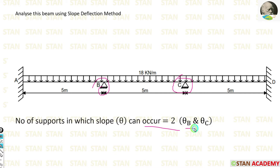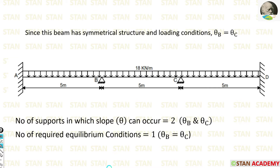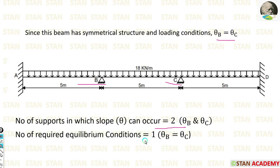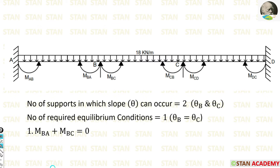At B we have θB and at C we have θC. This beam has a symmetrical structure and symmetrical loading, so θB equals θC. The number of supports where slope can occur is 2, at B and C, so we normally need two equilibrium conditions. But because θB = θC, the number of equilibrium conditions reduces to 1. We will apply the equilibrium condition at B, where MBA + MBC = 0.